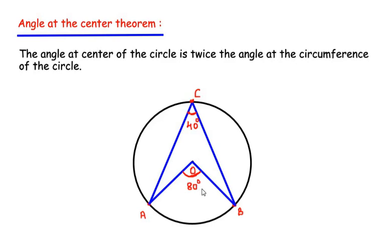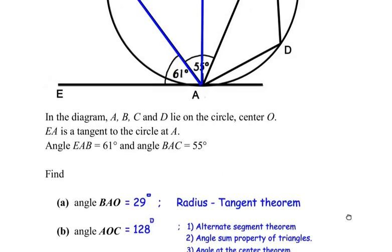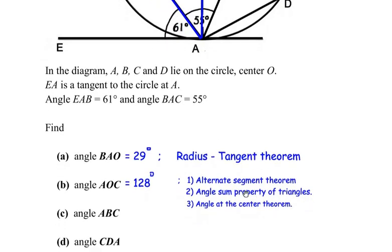Applying this to our example: consider points A and C, which make an angle at center O, and the same two points make an angle at circumference point B. Using the theorem — angle at center is twice the angle at circumference — we have 64 degrees at the circumference, so at the center it is two times 64, which is 128 degrees. So angle AOC is 128 degrees, found by using the alternate segment theorem, the angle sum property of triangles, and the angle at the center theorem.